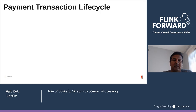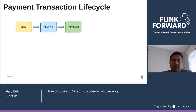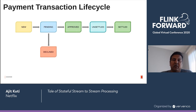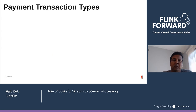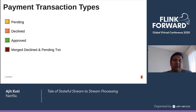Before looking at the transaction process in more detail, let's take a quick look at the payment transaction lifecycle. The lifecycle starts with the transaction in a new status while being initiated. When the payment processor starts processing, it marks the transaction as approved or declined. The processor then tries to settle the transaction with the respective financial institution — if settled, it marks it as settled, else cancelled. We use the following notation: yellow for pending, pink for declined, green for approved, brown for merged decline and pending, and dark green for merged approved and pending.